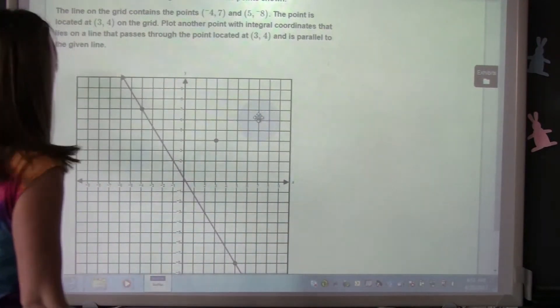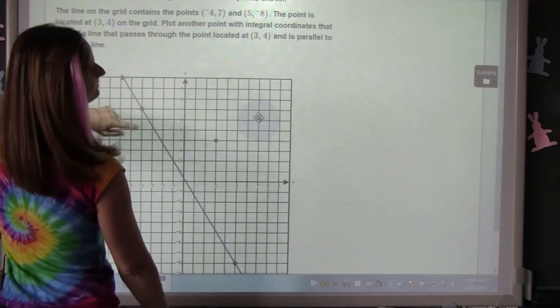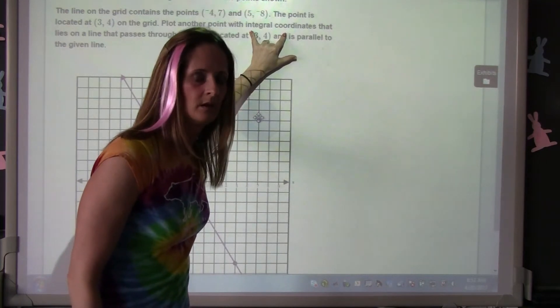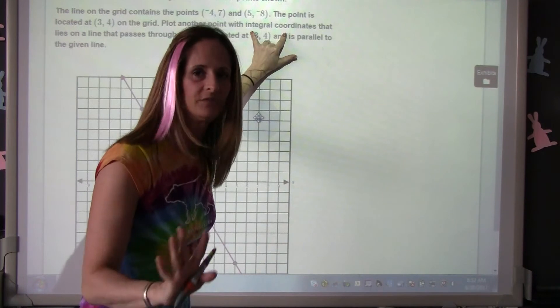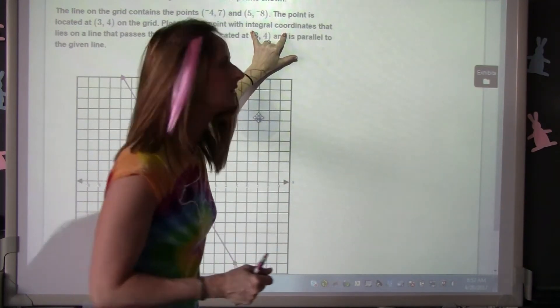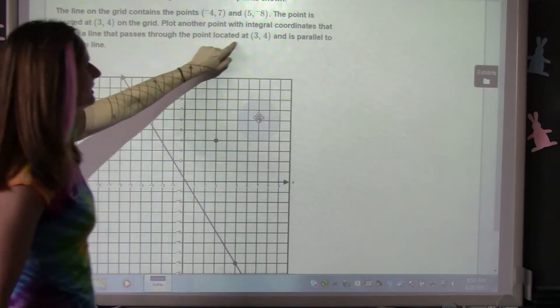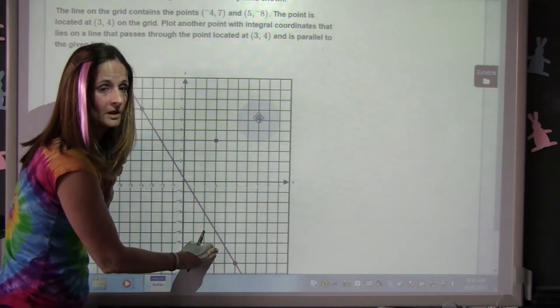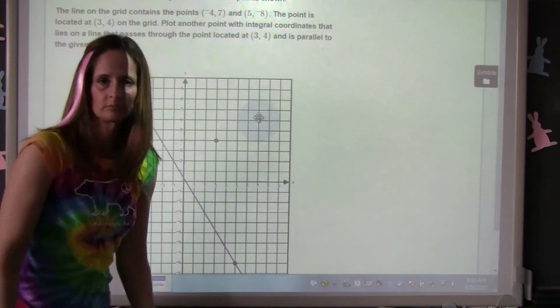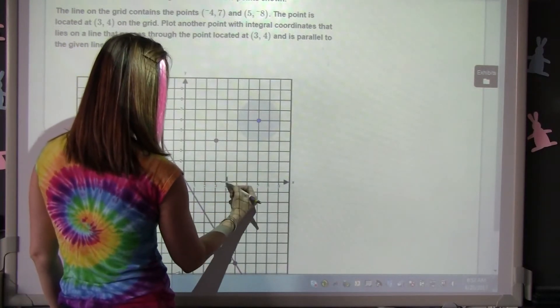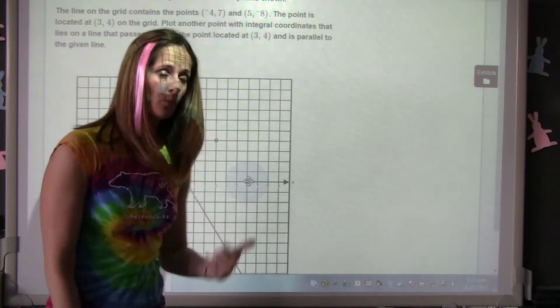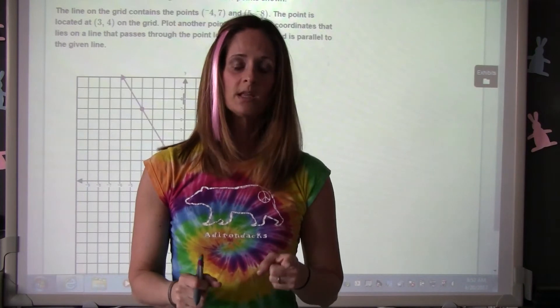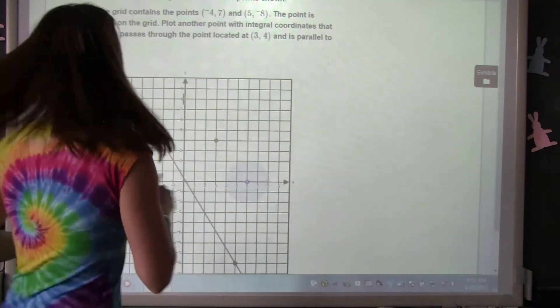Let's read the question. The line on the grid contains points negative four seven and five negative eight. The point located at three four is on the grid. Plot another point with integral coordinates. All that means is nice whole numbers. Don't let those words freak you out. That lies on a line that passes through the point located at three four and is parallel to the given line. Parallel lines have the same slopes, so we have to figure out what the slope of this line is. Let's say it's negative four thirds. From here we go from this point, we go down one two three four, over one two three, put our answer. That's not the only answer. We could go down another four and over three, or we could go over three and up four. The computer knows all those answers are correct, and it's only going to allow you to plot one point.